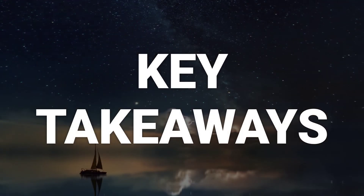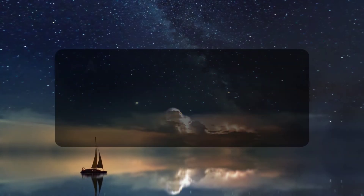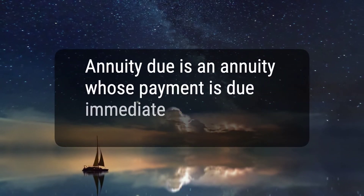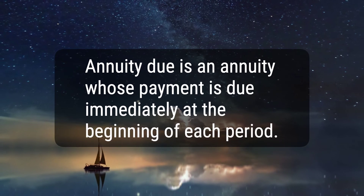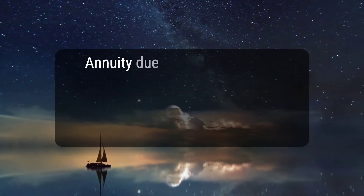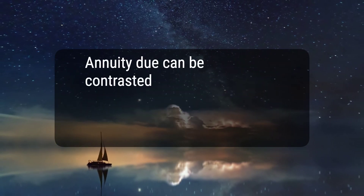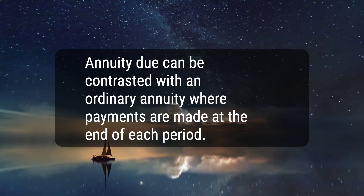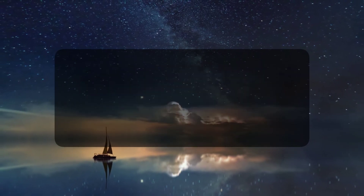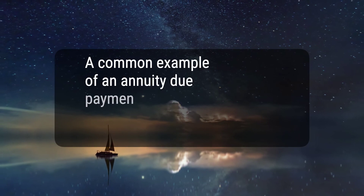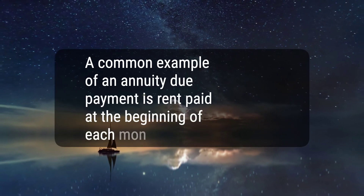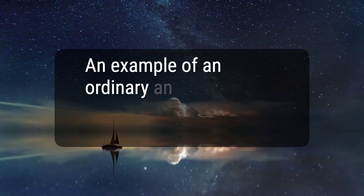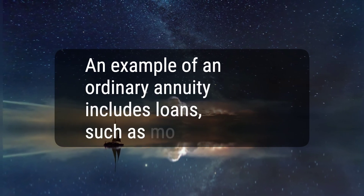Here are five key takeaways. 1. Annuity due is an annuity whose payment is due immediately at the beginning of each period. 2. Annuity due can be contrasted with an ordinary annuity where payments are made at the end of each period. 3. A common example of an annuity due payment is rent paid at the beginning of each month. 4. An example of an ordinary annuity includes loans, such as mortgages.